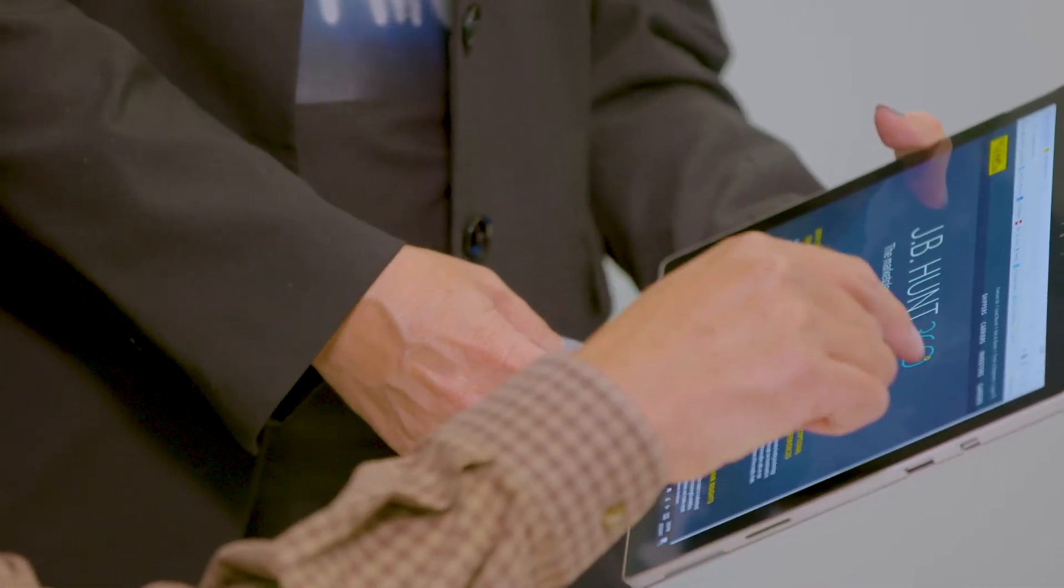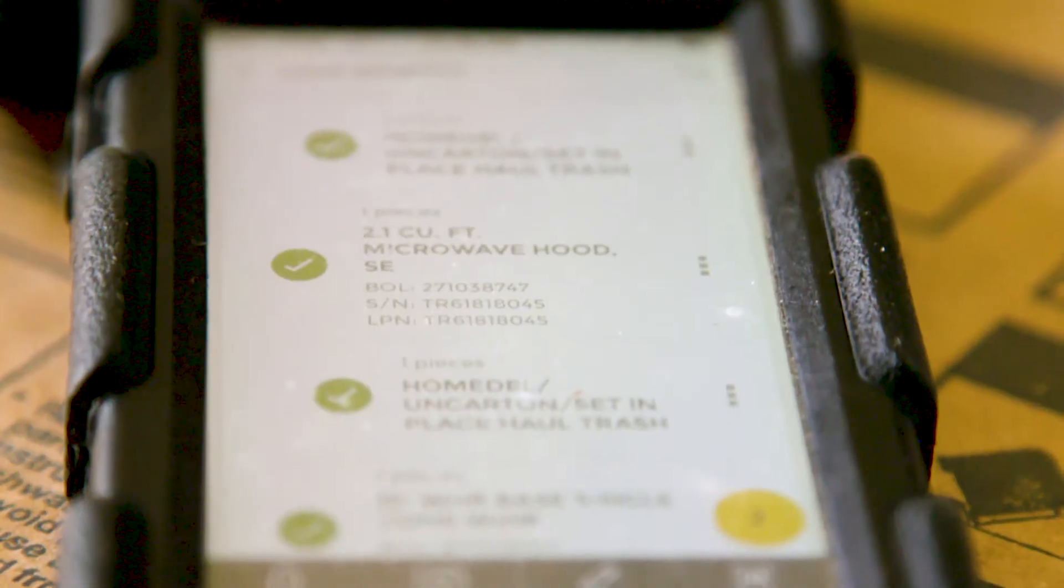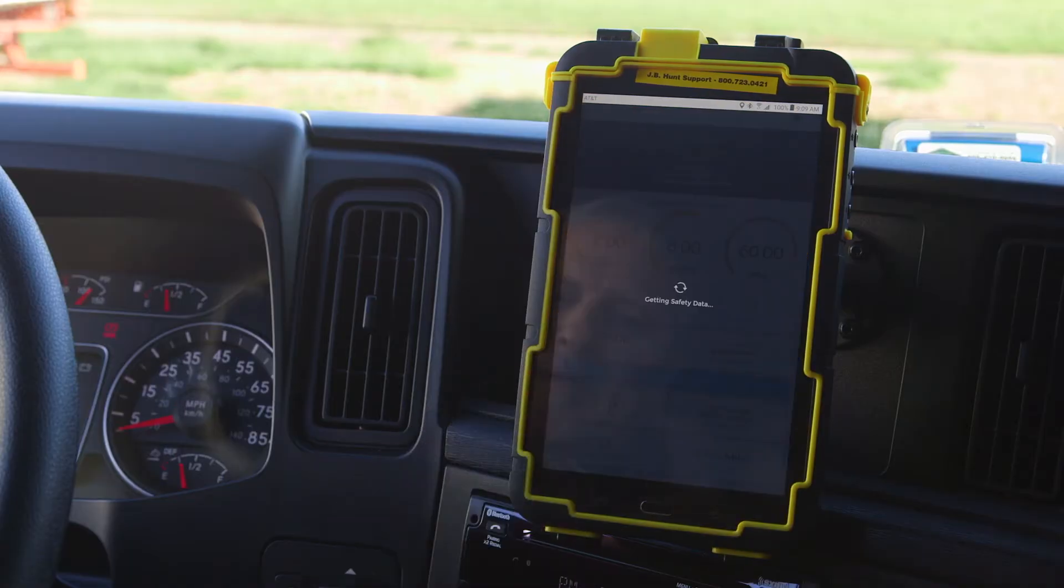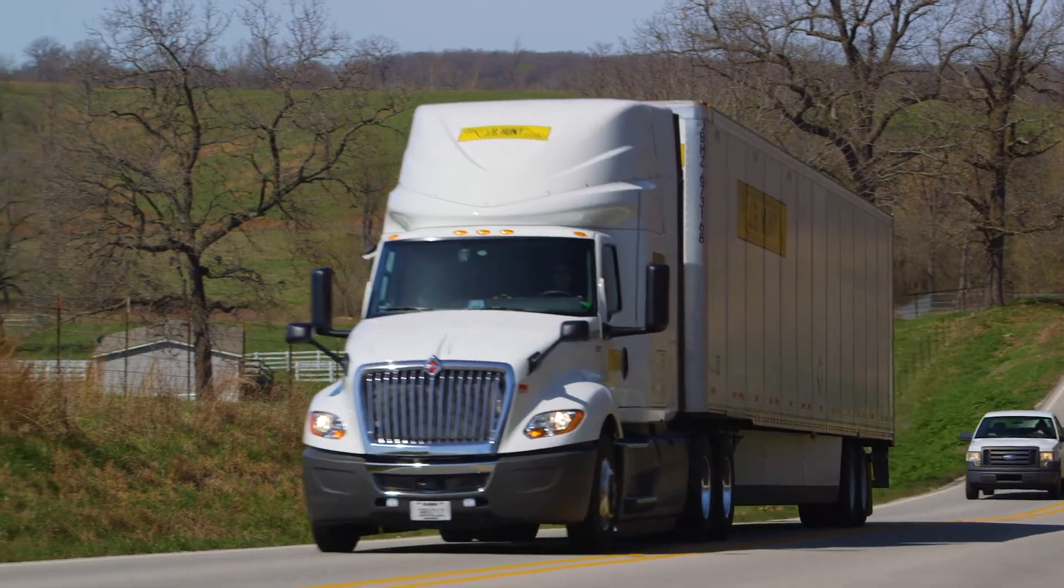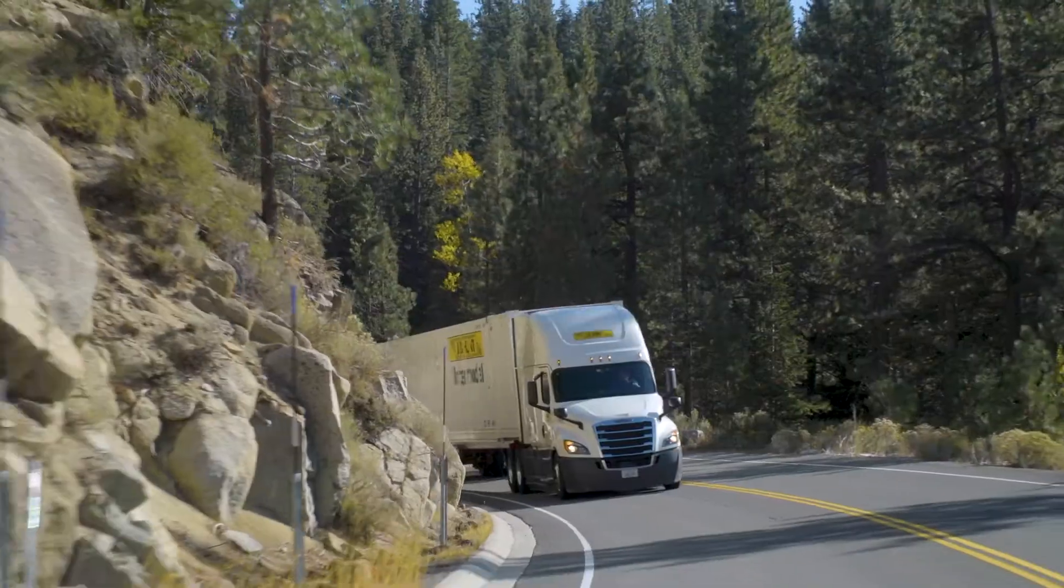J.B. Hunt is not an old trucking company. It's a digital company, one that really leverages information and data to make decisions every day. We've just tapped the potential of Azure. And we are disrupting the industry.